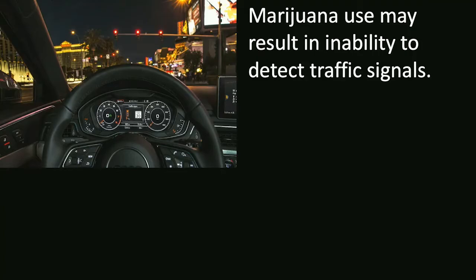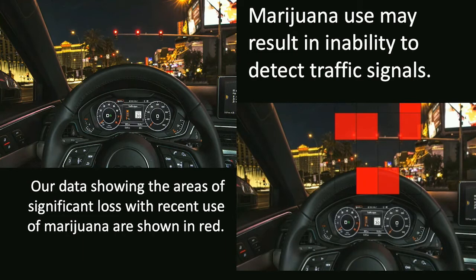IMAD is unique: it will never replace a biological test like blood, saliva, or breath, but is used in addition to them. Unlike alcohol, marijuana doesn't have a linear relationship between function and biology, so officers need to assess actual impairment. Their feasibility study showed statistically significant data: red areas in the visual field were significantly impaired compared to baseline with marijuana consumption — meaning an impaired driver literally cannot see a stop sign.